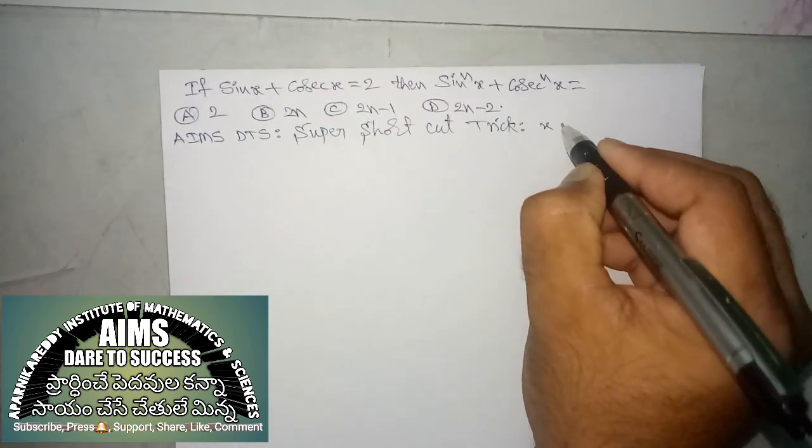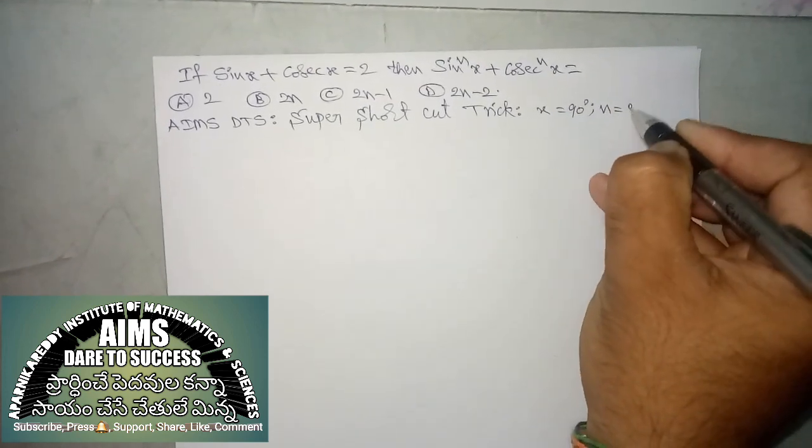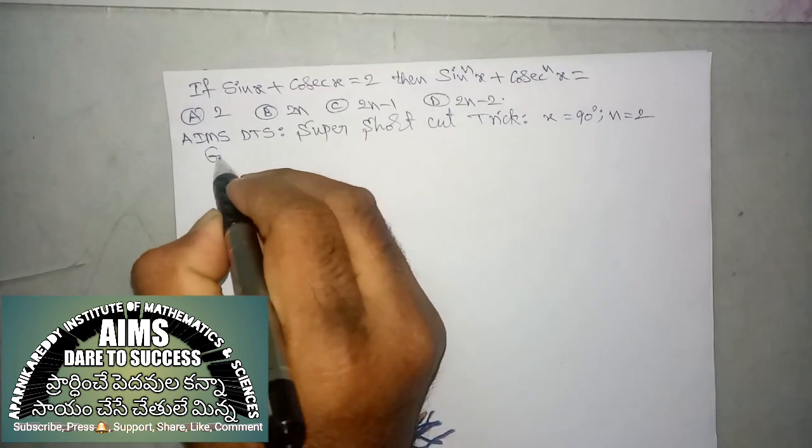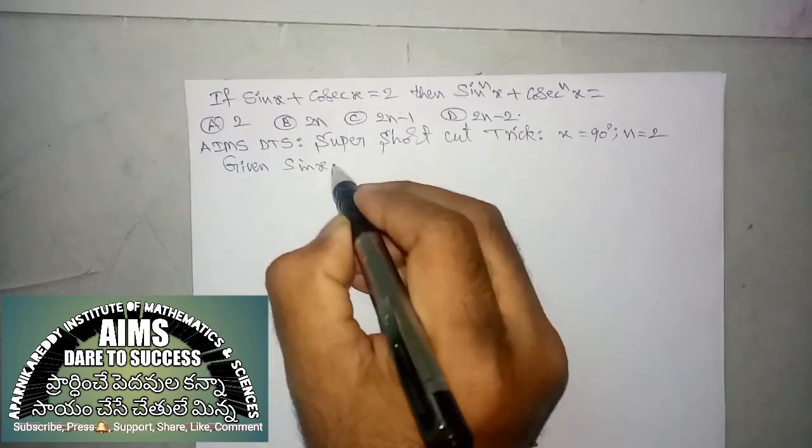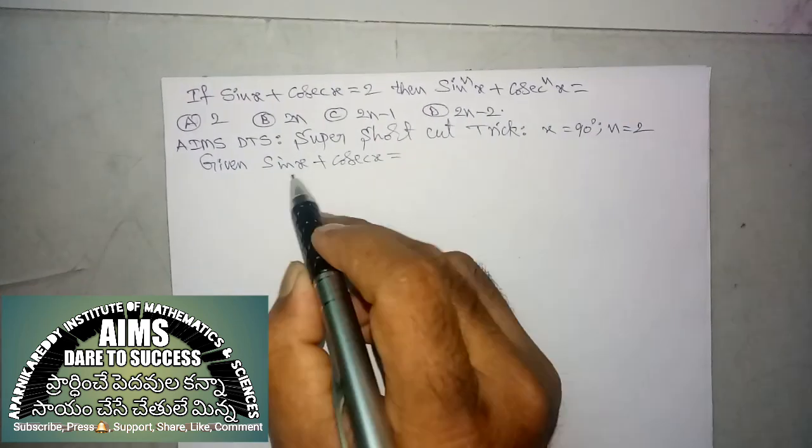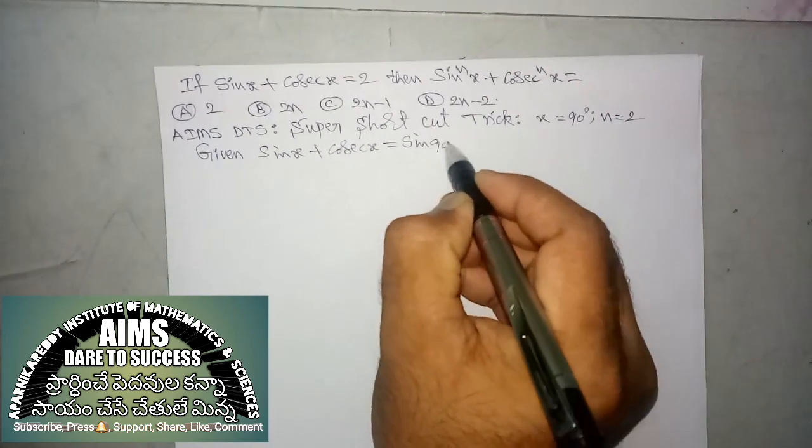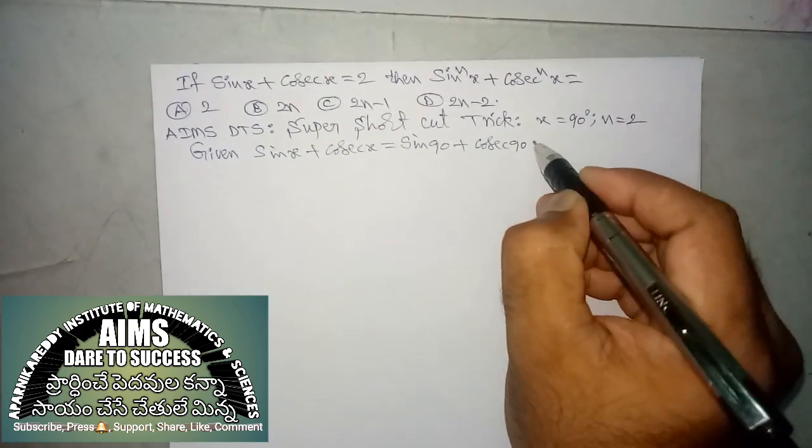substitute x is equal to 90 degrees and n is equal to 2. So, first of all, given value is, sin x plus cosecant x is equal to x value 90. So, we have to substitute here, sin 90 plus cosecant 90 is equal to,